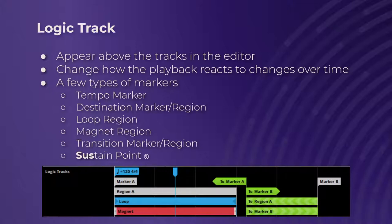Destinations will allow you to set a spot in the timeline that transitions can jump to. They are essential for organizing, particularly with music, and they can be markers or regions. Then you've got loop and magnet regions. For the loop, once the time marker hits the end of it, it will go back to the beginning, looping that section as you'd expect. You can change the probability of it looping, add conditions, and set the quantization. You can also double-click them and rename them since they're basically just destination regions with an added effect.